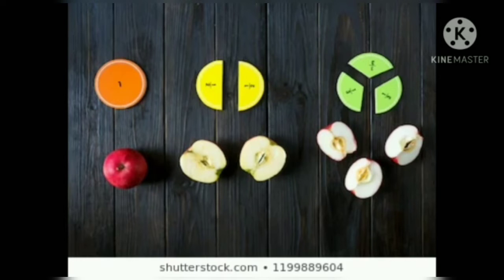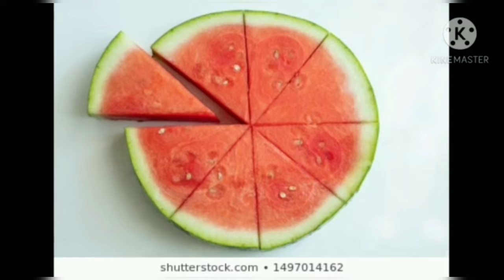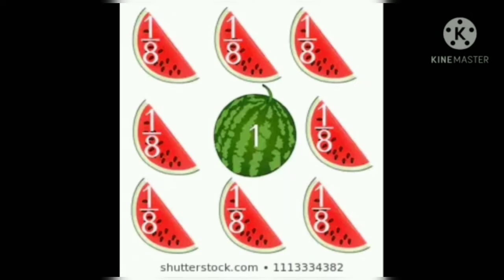Another example: in one watermelon we can divide into eight equal parts. One is the whole part, it is divided into eight equal parts. It is one out of eight parts, written as one by eight.